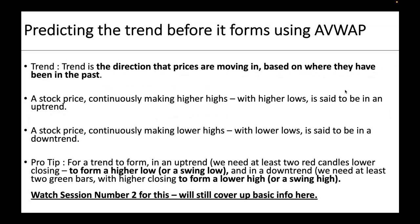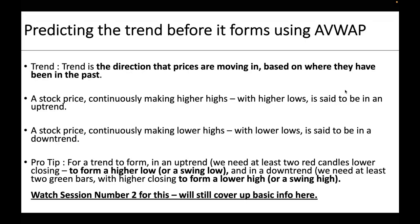In an uptrend, the stock moves in a higher high, higher low formation. In a downtrend, the stock moves in a lower high, lower low formation. A tip I use: you need two lower-closing red candles in an uptrend to form a potential swing low, and two higher-closing green candles in a downtrend to form a potential swing high. Session number 2 on the Google Drive covers this in detail.